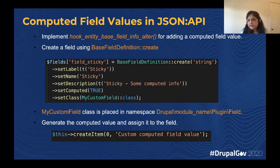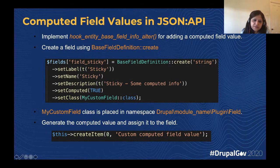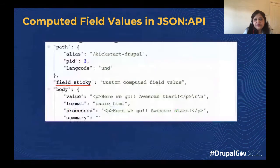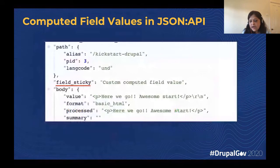To send computed information in our JSON response, we have a hook called entity_base_field_info_alter. Here I am adding a field called sticky because I am probably sending some sticky information with my content. I am using my class of plugin field type, which is my custom field, responsible for evaluating and providing the value of my field. I am just sending a simple string saying 'custom computed field value.' Once I do that, the field sticky which I created will be added in my JSON response, along with the value I have set. This is how we add custom computed values to a JSON response.